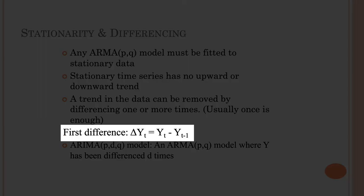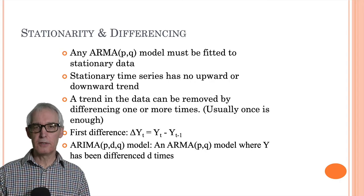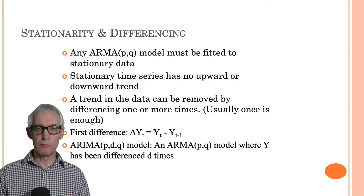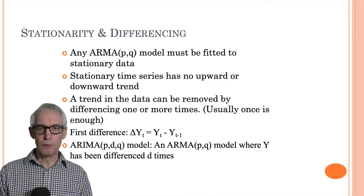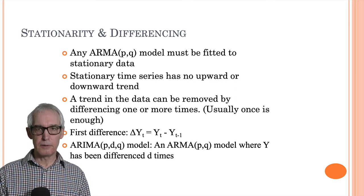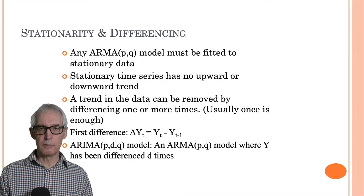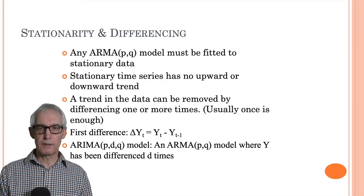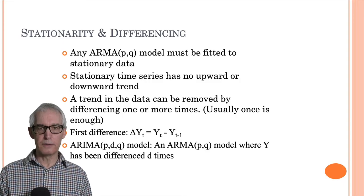This is known as the first difference, shown as delta yt. That triangle is delta, and it's simply equal to the difference between the current value yt and what it was one period back — the change in the value from one period to the next. Normally, if you have non-stationary data and you find the first difference, that first difference will be stationary and you can use it for modeling. Occasionally the first difference will still be non-stationary and you have to take the second difference.